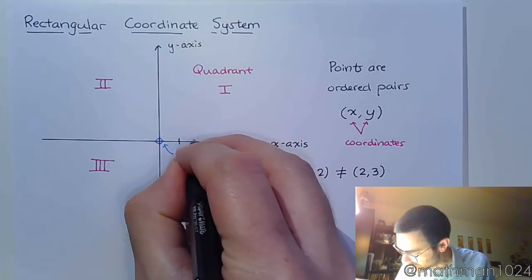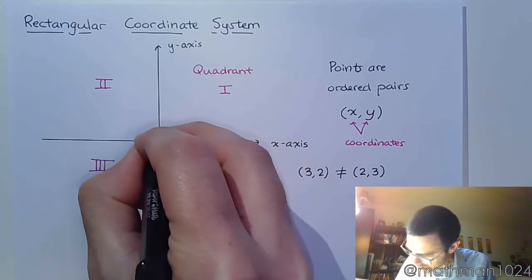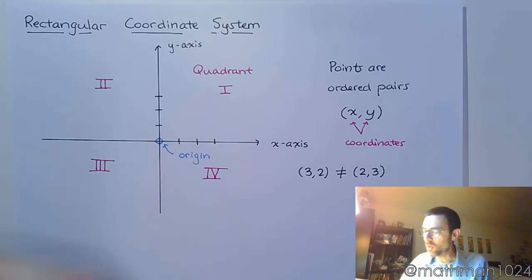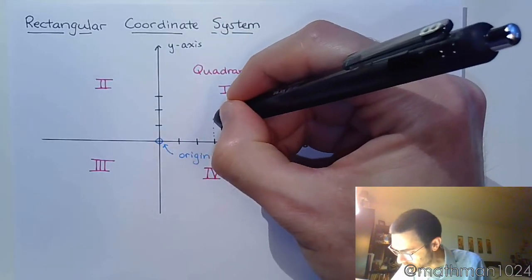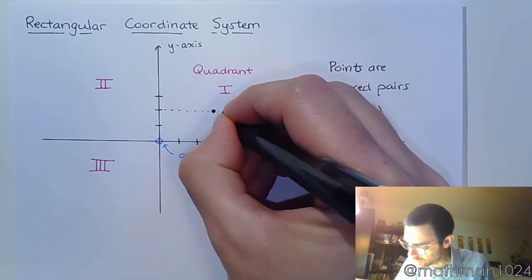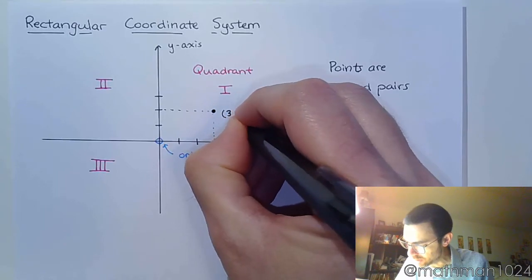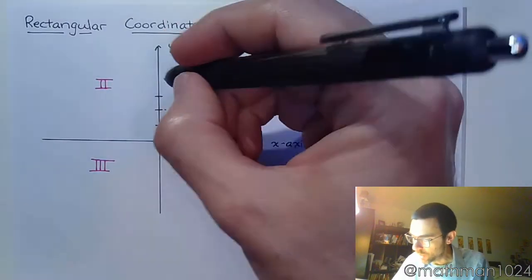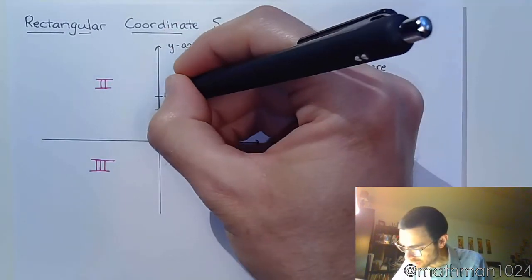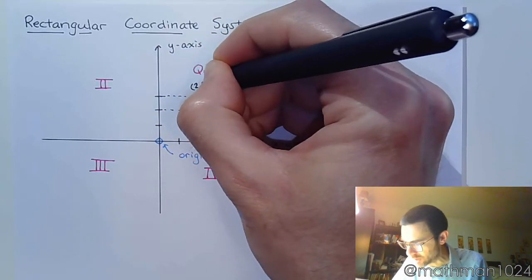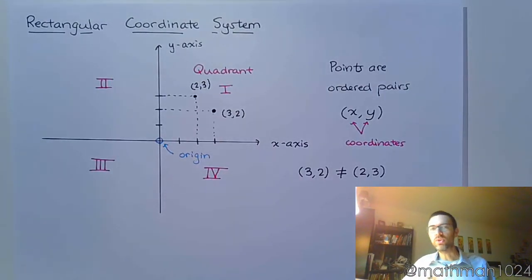The ordered pair (3, 2) is not the same as the ordered pair (2, 3) — order is very, very important. The ordered pair (3, 2) would be where x is 3 and the y value is 2. As opposed to the ordered pair (2, 3), which would be when x is 2 and y is 3. So you see, these are in two different locations. The order is very important.